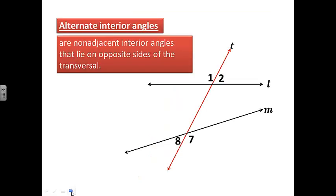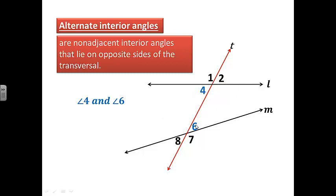Now let's look at alternate interior angles. Before we look at the definition, let's look at an example. Angle 4 and angle 6 are alternate interior angles. They are non-adjacent — clearly not right next to each other. Interior just means in between line L and line M, and they are on opposite sides of the transversal — so one is on the left side and one is on the right side. Another example of alternate interior angles would be angle 3 and angle 5.